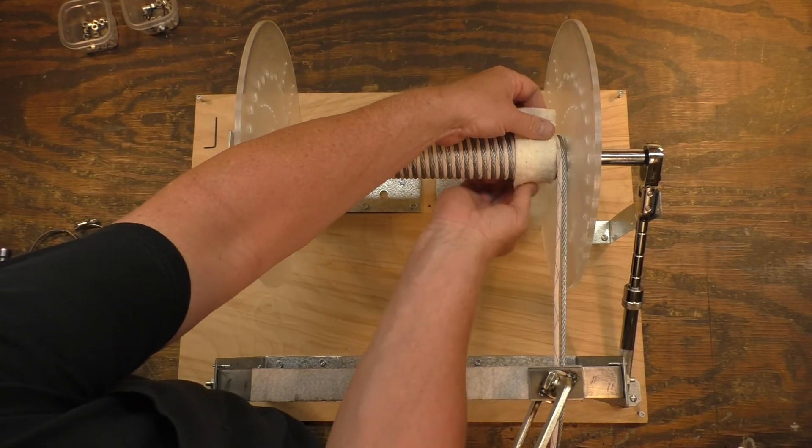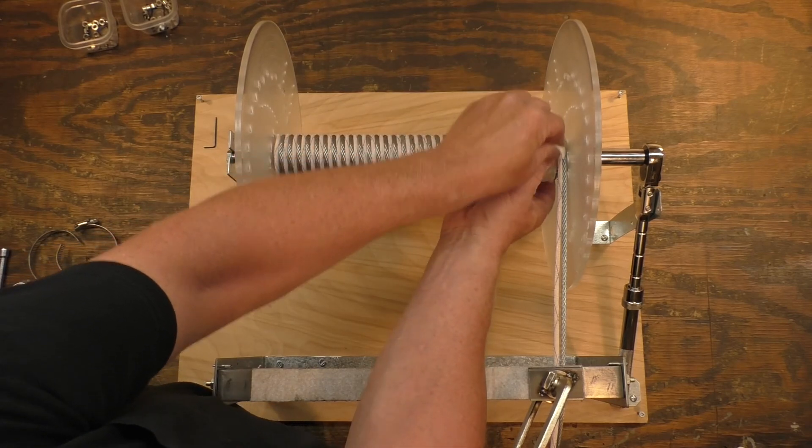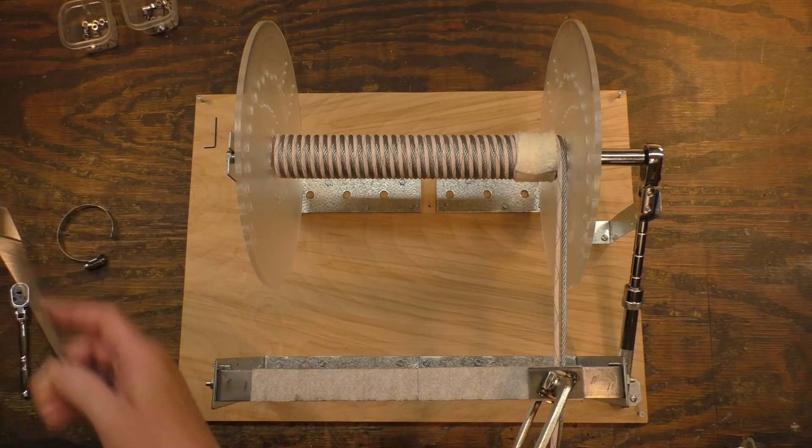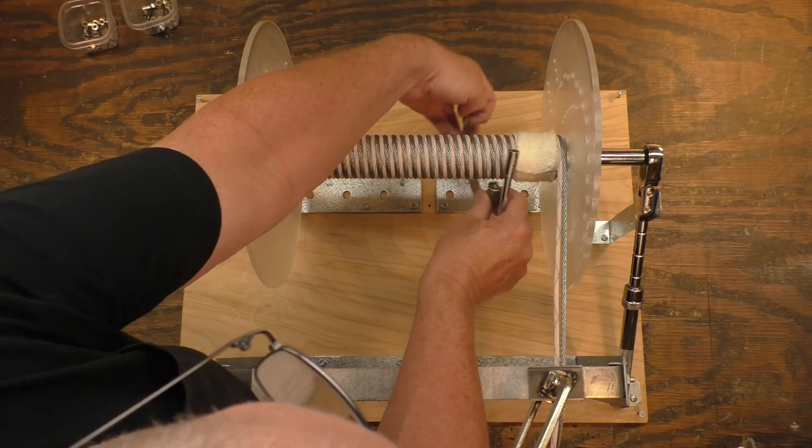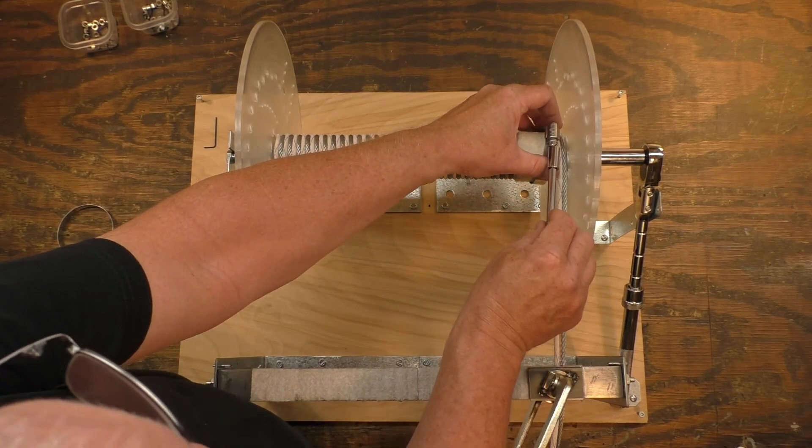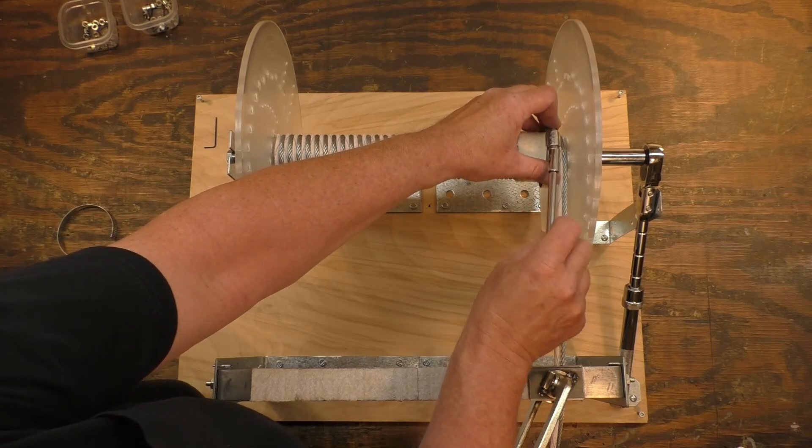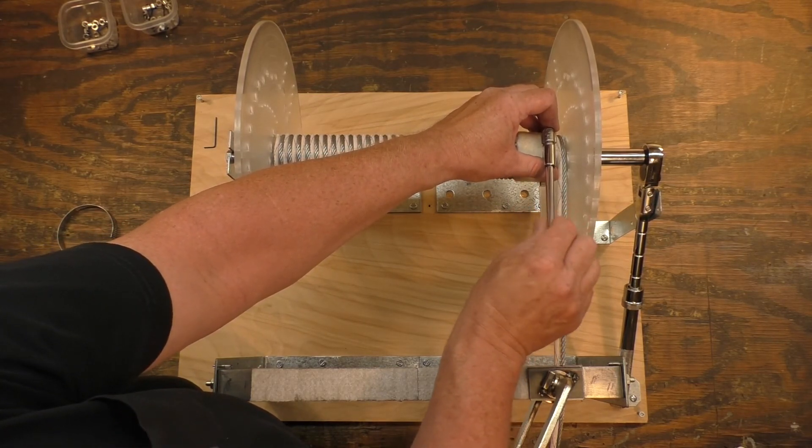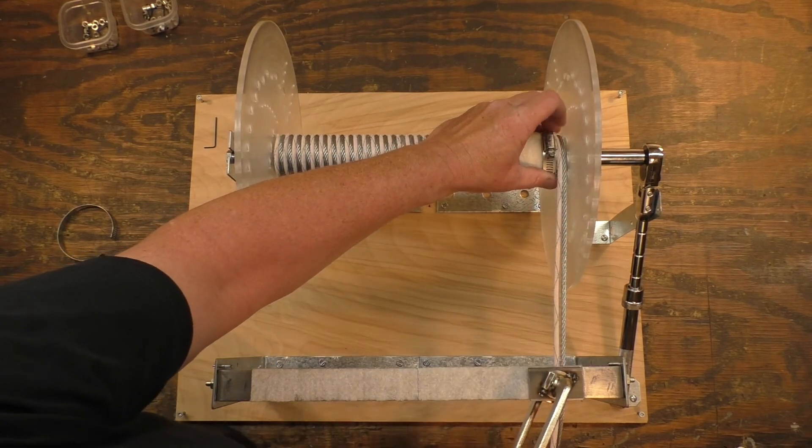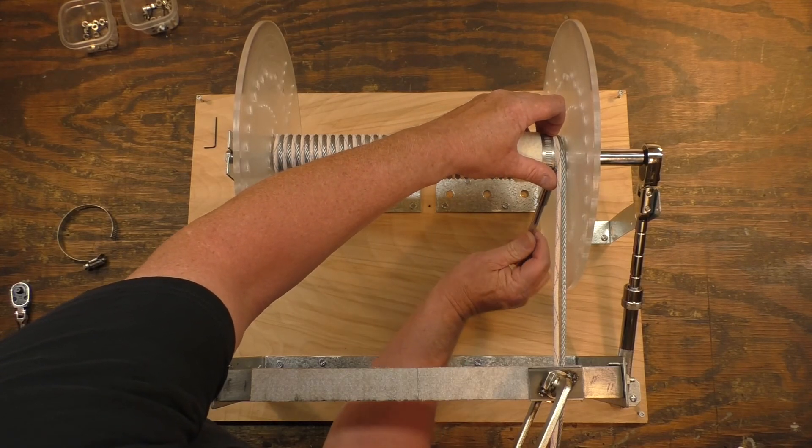Remember the cotton batten that doesn't wick or absorb water? I found a purpose for it. It's a good thing because I bought about a yard and a half of it. So what I'm going to do is I'm just going to slip a gear clamp over the end.